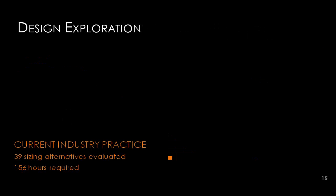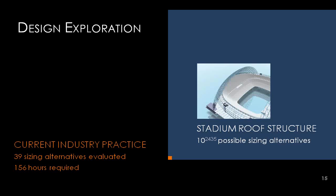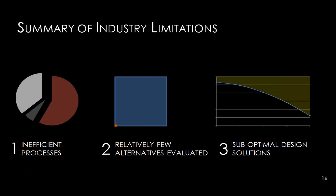In terms of design exploration, looking at 40 different sizing alternatives seems reasonable, but compared to the number of possible configurations for a structure like the stadium roof, the real question is: is this efficient? Do engineers have enough experience and skill that they can find the best designs in a very small number of alternatives? The observations from industry show relatively inefficient processes with most time spent managing information and exploring a very small subset of the design space — potentially leading to sub-optimal design solutions.